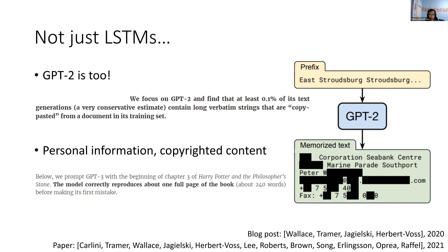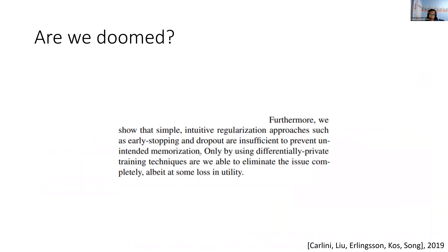So now the question is: is there any solution for this? They tried a bunch of different approaches — things like early stopping, dropout, or other regularization methods — but those don't work; these types of regularization are insufficient. The only solution they were able to find is using differentially private training techniques, which eliminated the issue completely. But there are two big questions: what is differential privacy and how does it work, and what does the loss in utility mean — how bad is it? That's kind of what today's talk is focusing on.